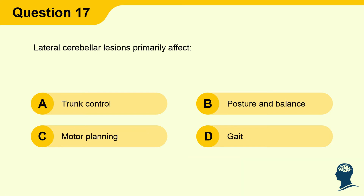Question 17: Lateral cerebellar lesions primarily affect: A) Trunk control, B) Posture and balance, C) Motor planning, D) Gait.